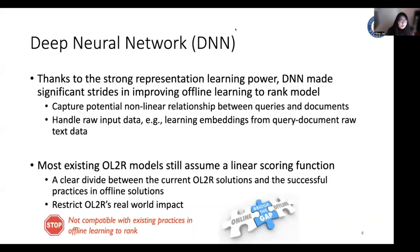However, almost all the existing online learning to rank models still assume a linear scoring function. There's a clear divide between the current online learning to rank solutions and the successful practices in offline solutions. This greatly restricts online learning to rank's real-world impact. And in this work, we focus on bridging the gap between online and offline learning to rank.